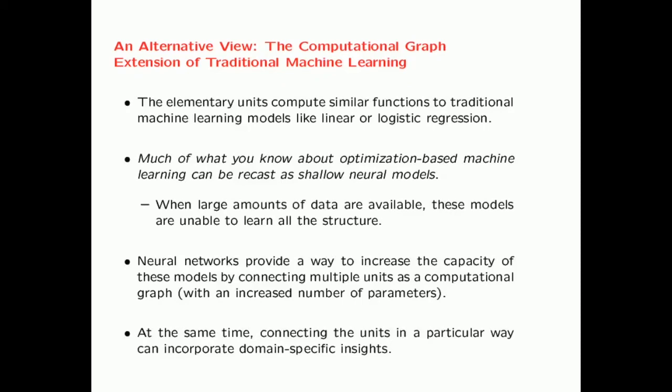An alternative view of neural networks is to view them as computational graph extensions of traditional machine learning. The elementary units in the computational graph compute very similar functions to traditional machine learning models like linear or logistic regression. Much of what you know about traditional machine learning models — linear regression, logistic regression, support vector machines — can be recast as shallow neural models. The main problem is that when large amounts of data are available, these models are unable to learn all the structure. Neural networks provide a way to increase the capacity of these models by connecting multiple units as computational graphs, and by connecting units in particular ways, one can incorporate domain-specific insights.